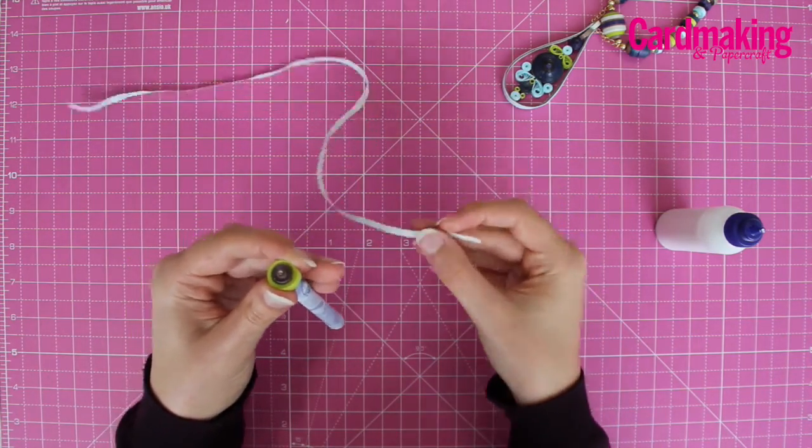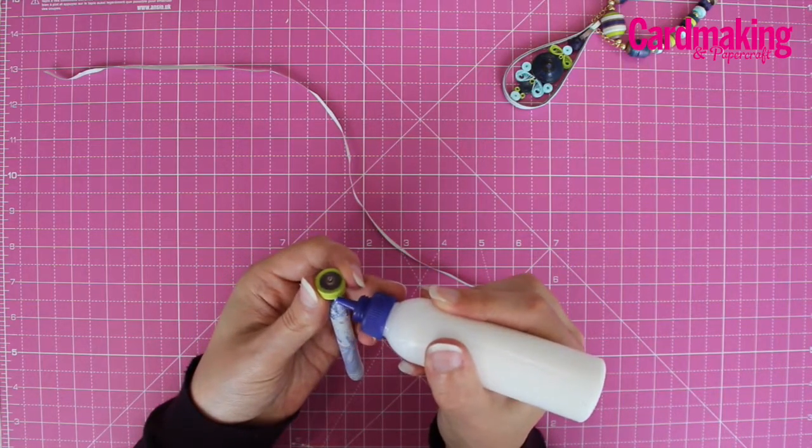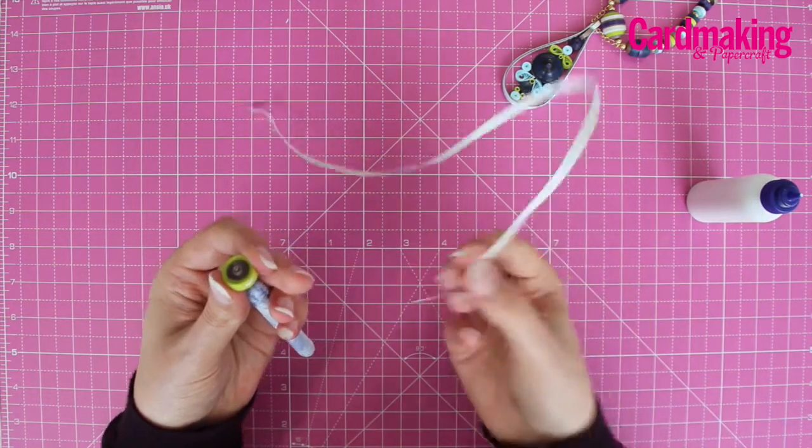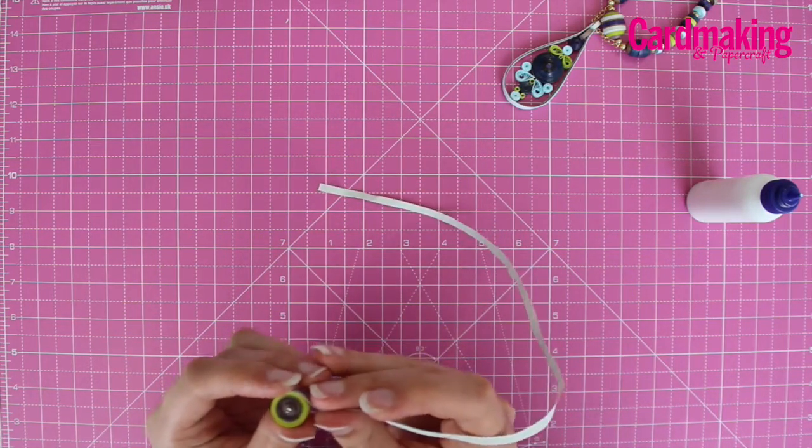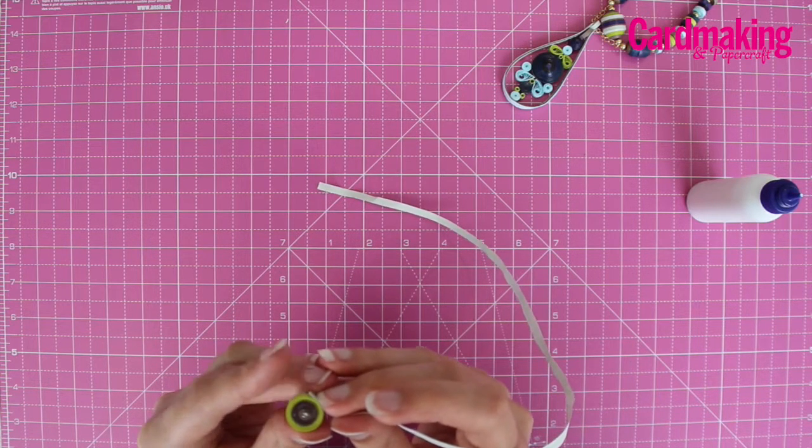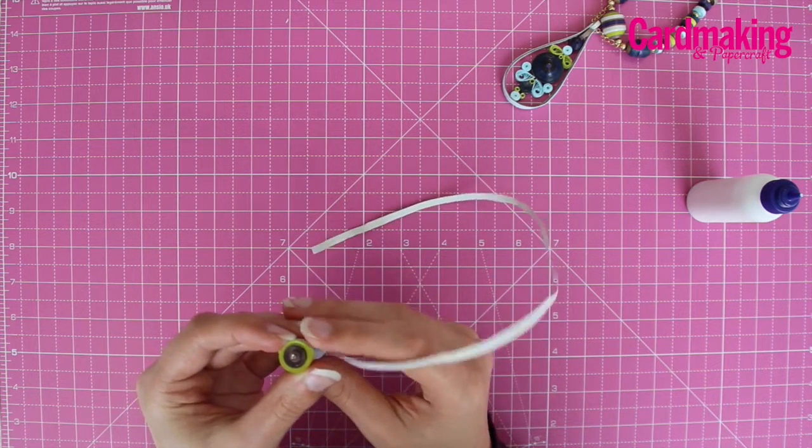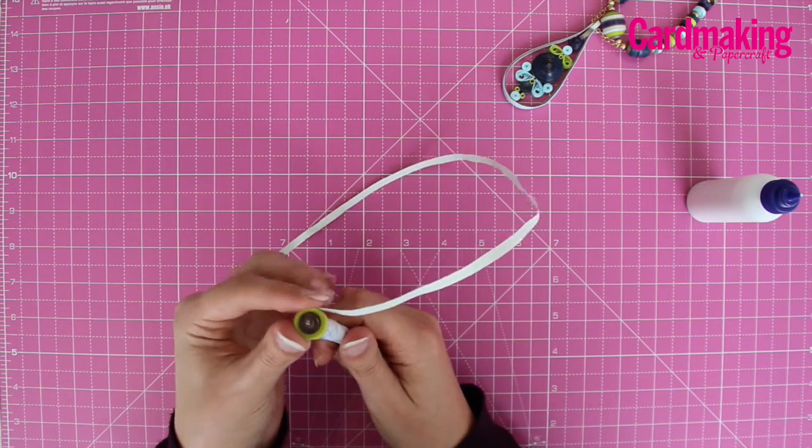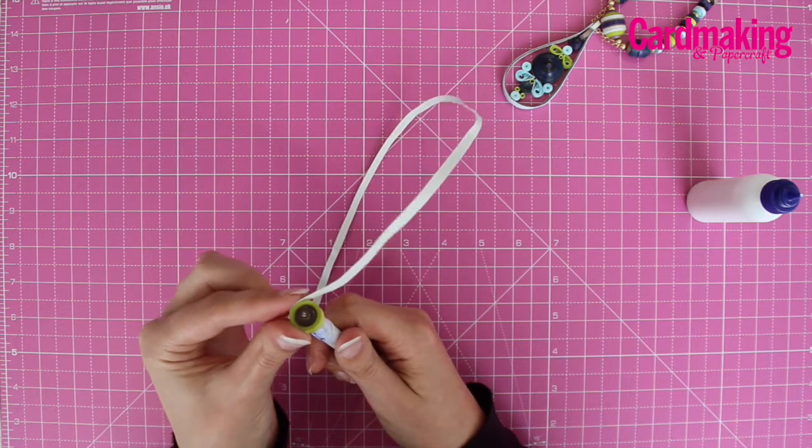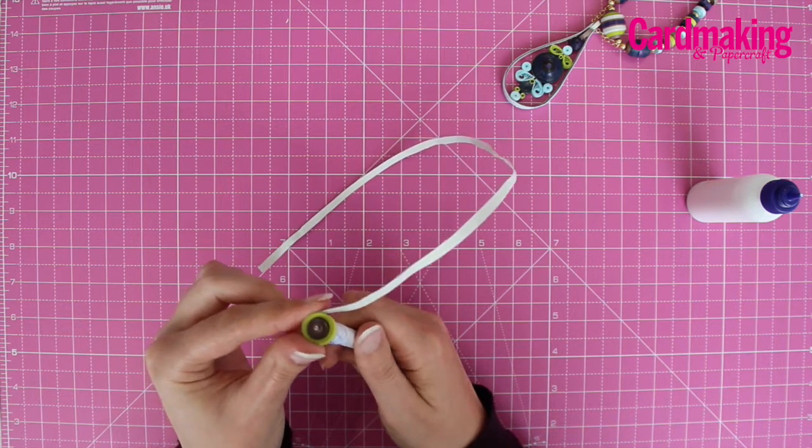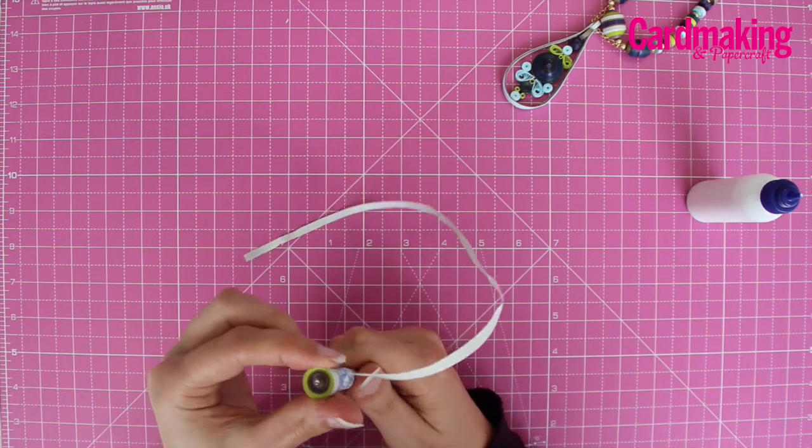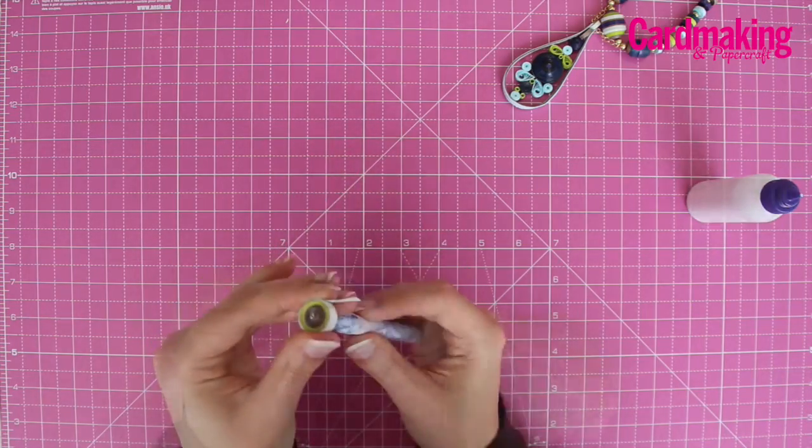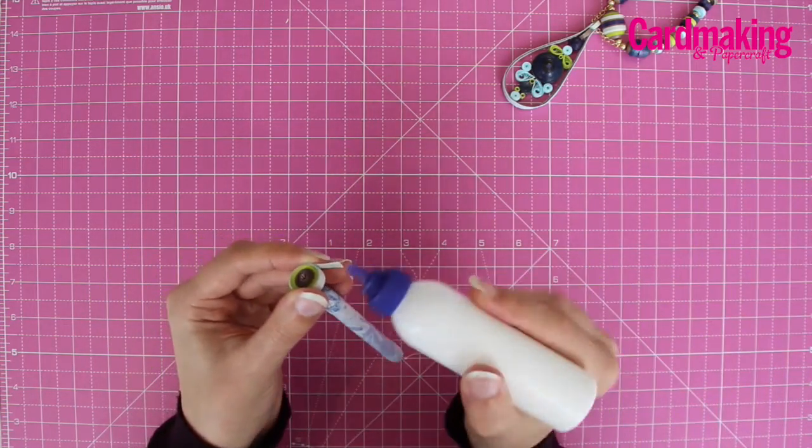Then take a white strip and attach that to the outside of the coil. Hold that in place for a moment until it's dry. And then coil that around as well. When you get to the end of that coil, secure it in place.